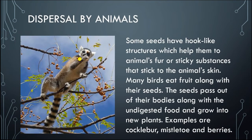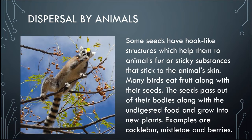Now, dispersal by animals — animals and birds are also agents of seed dispersal. Some seeds have hook-like structures which help them attach to animals' fur, or they have a sticky substance that sticks to the animal's skin. Many birds eat fruit along with their seeds, and the seeds pass out of their bodies along with undigested food and grow into new plants. Let's see how animals help.